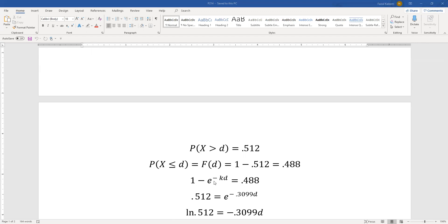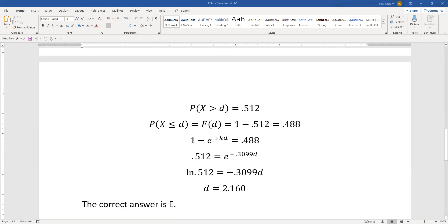we get 1 minus e to the negative kd equals 0.488. Although I know k, I'm just keeping it in this form for this step. When I bring 0.488 to the left and take the e term to the right, I get 0.512 equals e to the